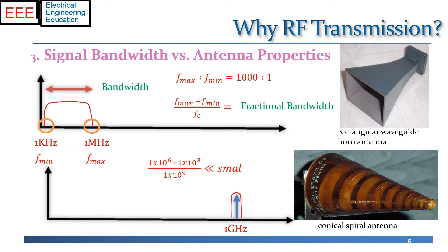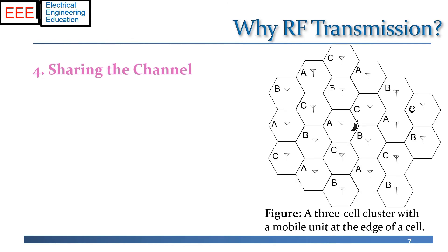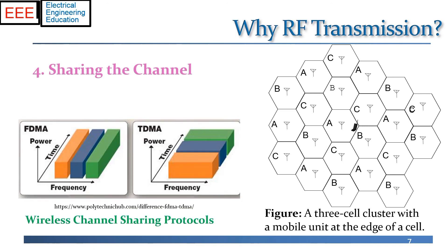So the second reason we go for RF transmission rather than baseband is that the fractional bandwidth is much, much smaller. The third reason is that we're not the only ones trying to transmit or receive. We don't build cellular networks for just one or two users — for example, GSM can handle a thousand users at the same time. Somehow we have to share the channel. If everybody is transmitting baseband and all voices occupy roughly the same bandwidth, the person who wins is the one who screams the loudest. So frequency division multiple access (FDMA) and time division multiple access (TDMA) techniques are used for channel sharing.